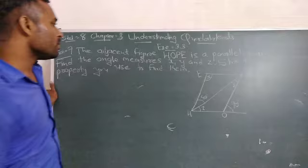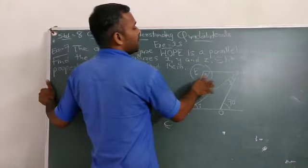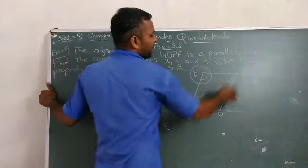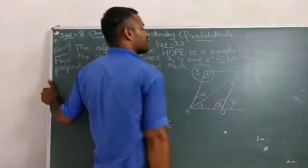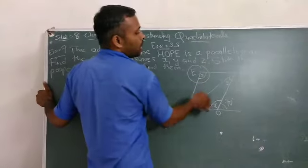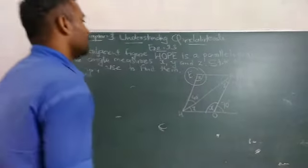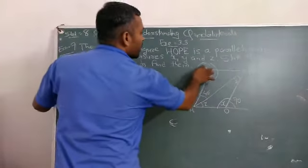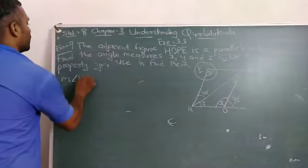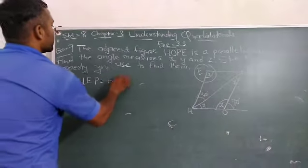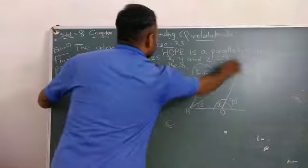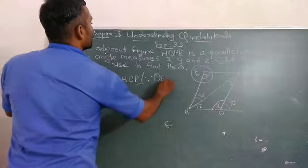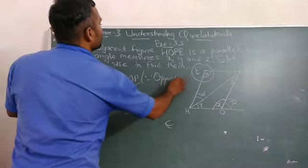First of all, if angle HOP is X, then angle HEP is also X. Why? They are opposite angles. Measure angle HEP equals measure angle HOP. Why? This is the opposite angle property.